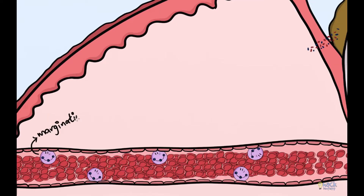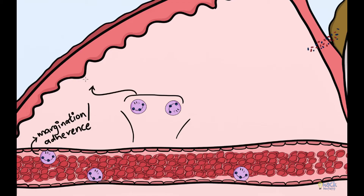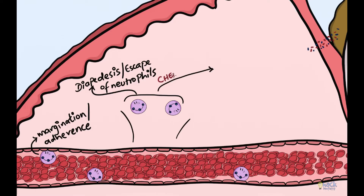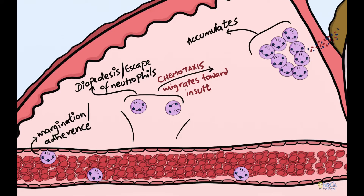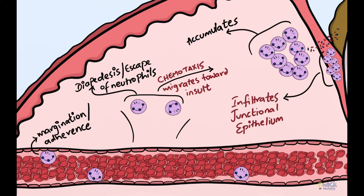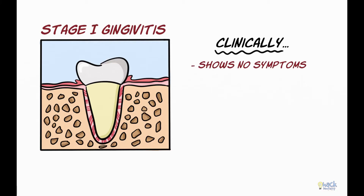There is margination or adherence of leukocytes in the capillary vessel, finally leading to diapedesis or escape of leukocytes, primarily neutrophils. These escaped neutrophils, via a process called chemotaxis, migrate to the area of insult and accumulate in the connective tissue below the sulcular and junctional epithelium. Neutrophils also penetrate the epithelium. Clinically, this stage may not show any symptoms but may present with exudation of gingival crevicular fluid.